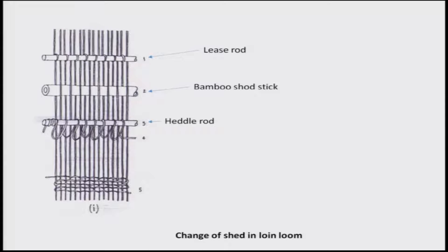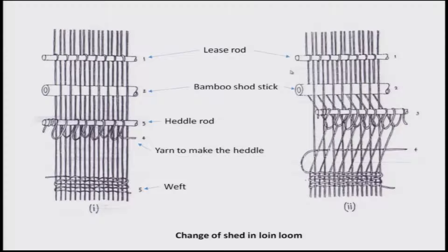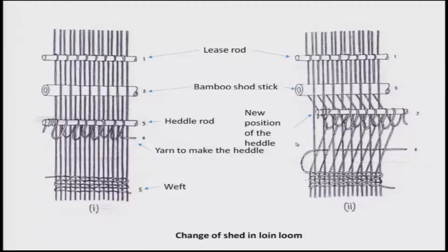The yarn makes the heddle, creating a loop. When the bamboo short stick is in place separating warps but the heddle rod is lifted, a space is created between the even and odd warps so the weft can pass through it — going from left to right. Then the heddle goes down and the weft goes from right to left, making a weave. This is the basic process of the loin loom.